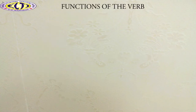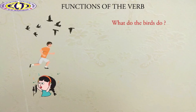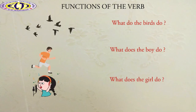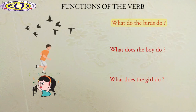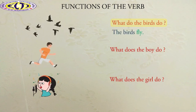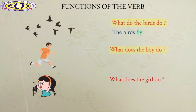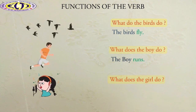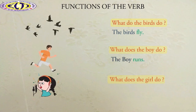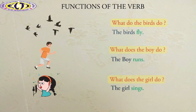Teachers, look at these pictures and answer the questions according to the functions shown in the pictures. What do the birds do in the first picture? Yes, the birds fly. What does the boy do in the next picture? Right, the boy runs. What does the girl do in the last picture? Correct, the girl sings.